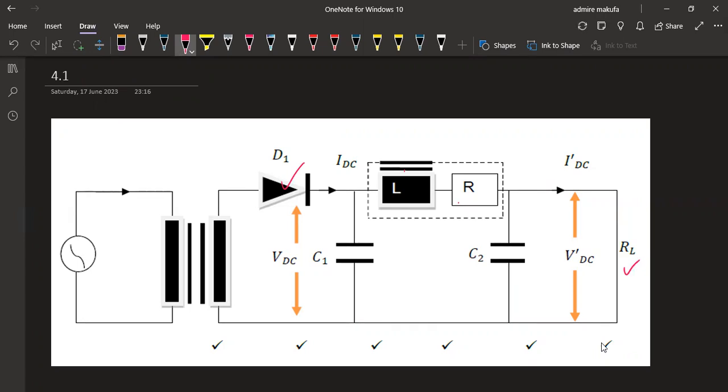Then we have got the output, which is our load resistor. Here we've got our input. That is what we're supposed to have.